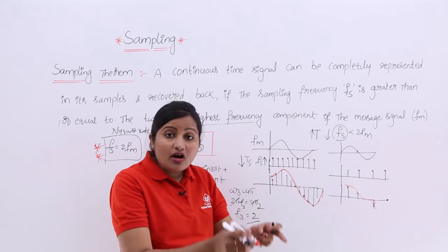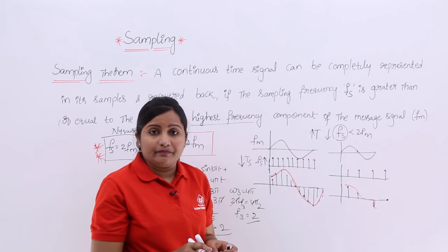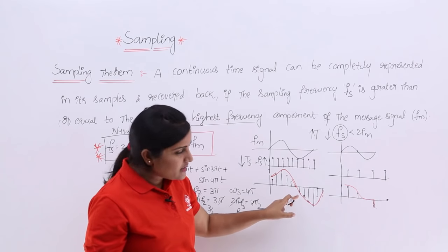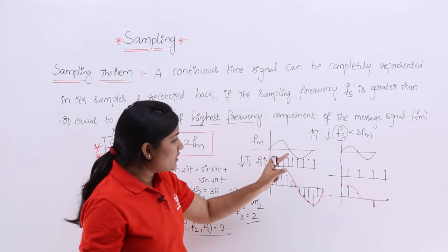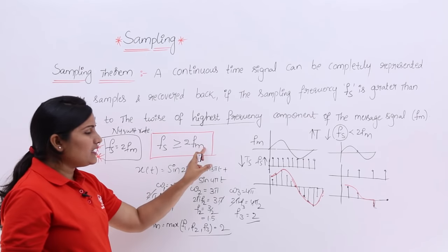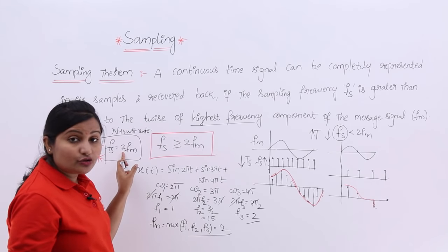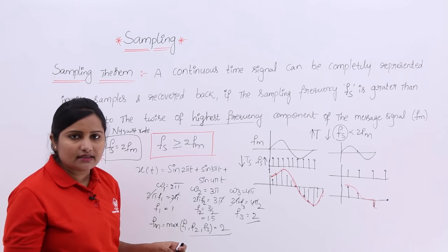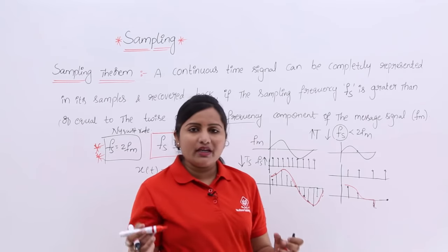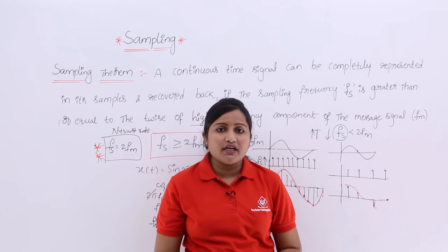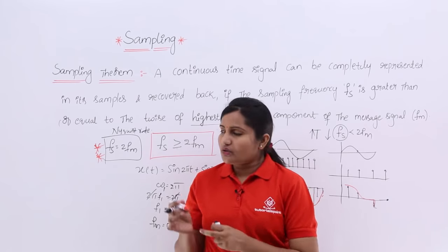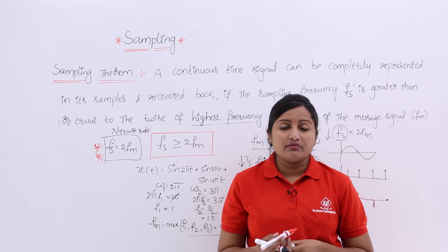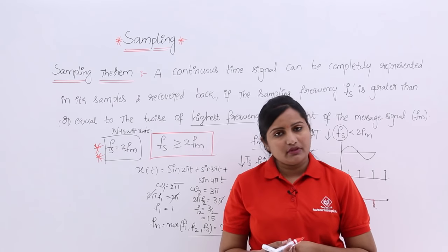That is what the sampling theorem states: any continuous signal can be completely represented into its samples and can be recovered back whenever the sampling frequency fs is greater than or equal to 2fm — at least the Nyquist rate — where fm is the maximum frequency component in the message signal. In the next class we are going to get the proof for the sampling theorem by verifying it through derivation.